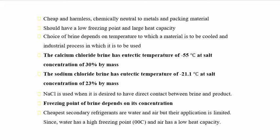The calcium chloride brine has a eutectic temperature of minus 55 degrees Celsius at a salt concentration of 30% by mass. The sodium chloride brine has a eutectic temperature of minus 21.1 degrees Celsius at a salt concentration of 23% by mass. Sodium chloride is used when direct contact between the brine and the product is desired. The freezing point of the brine depends upon its concentration. The cheapest secondary refrigerants are water and air, but their applications are limited — water has a high freezing point of 0 degrees Celsius and air has very low heat capacity.